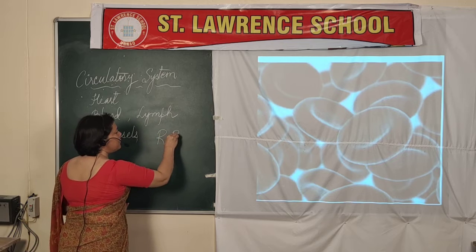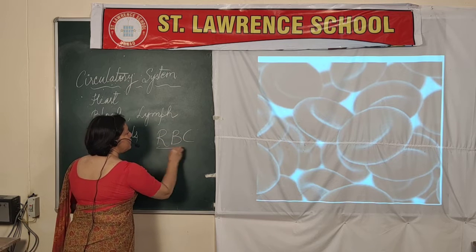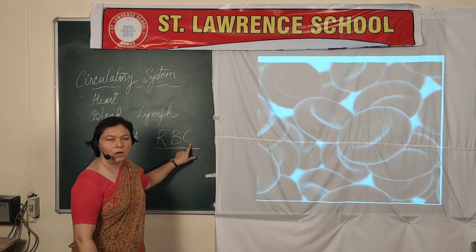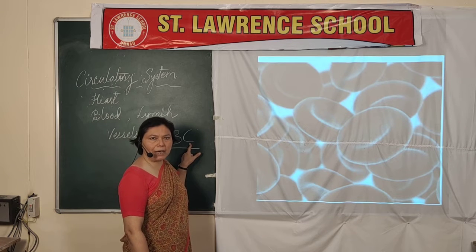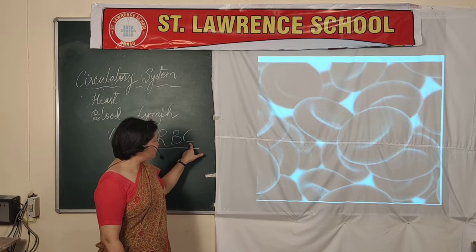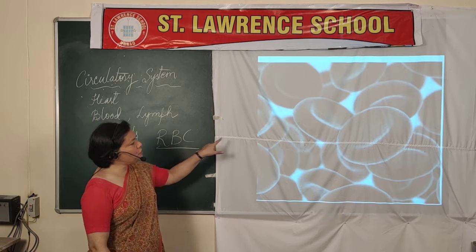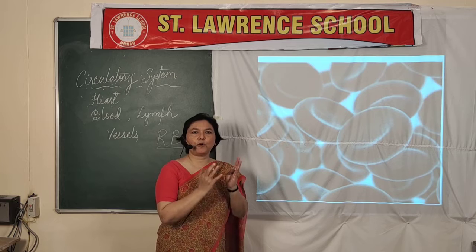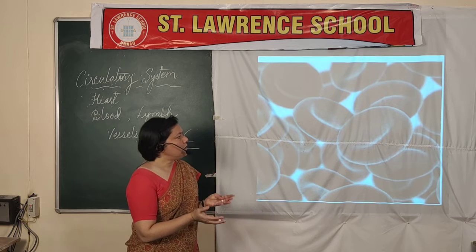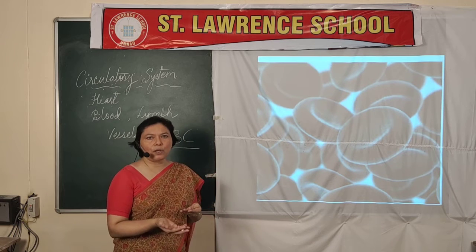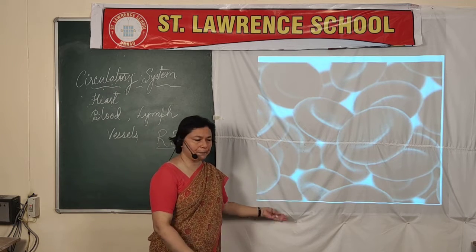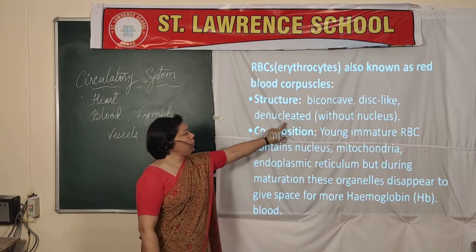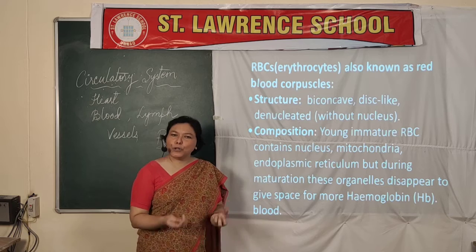The first corpuscle we will study is RBC — red blood corpuscles, also biologically known as erythrocytes. If you see the diagram, they are biconcave in structure, meaning concave from both sides. We also call them disc-shaped structures. They are denucleated, meaning without a nucleus.